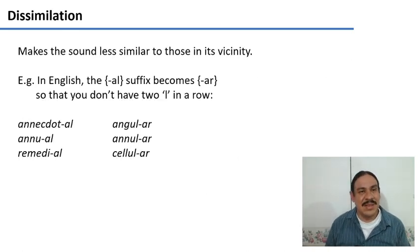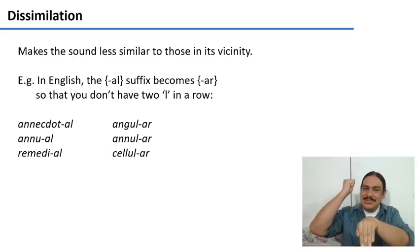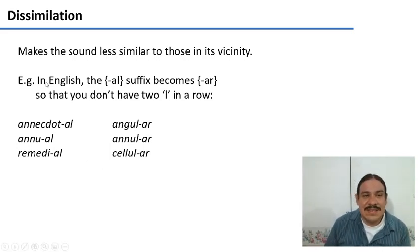Let's start with dissimilation. This is a process where a sound becomes less similar than the sounds in its vicinity. For example, in English we have a suffix that is -al, as in anecdotal, annual, remedial. So the suffix has this form. However, there's a second form that it has, as -ar, whenever it is in contact with another l.